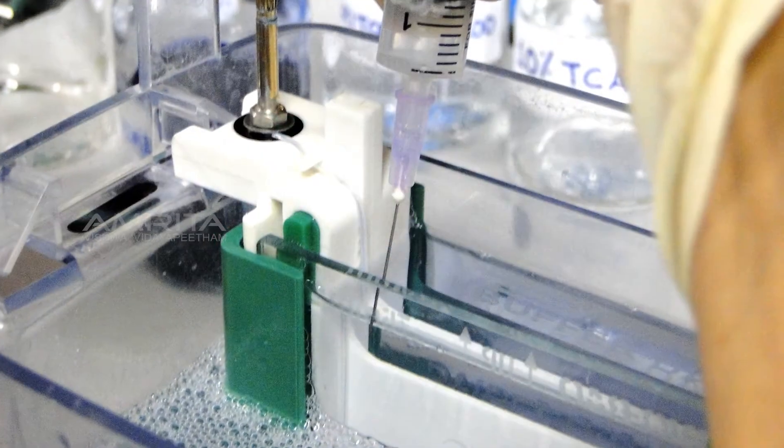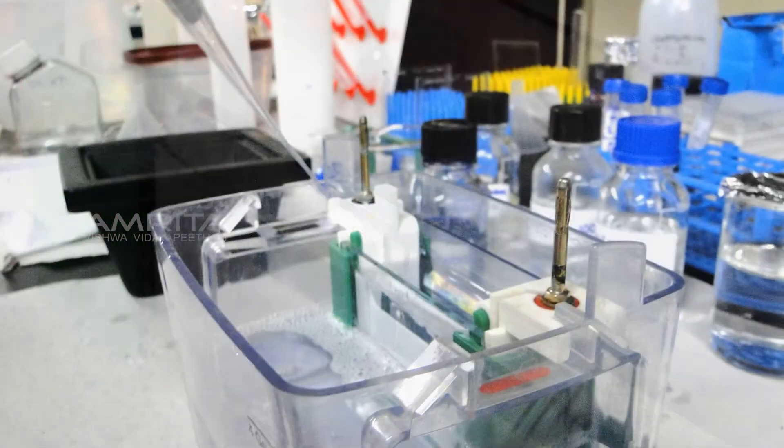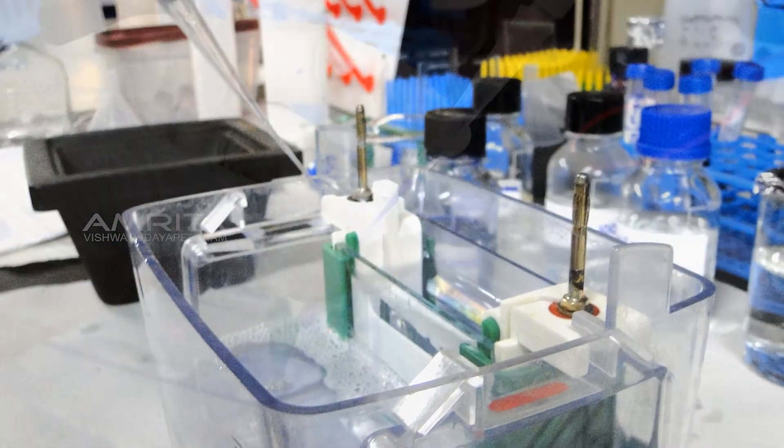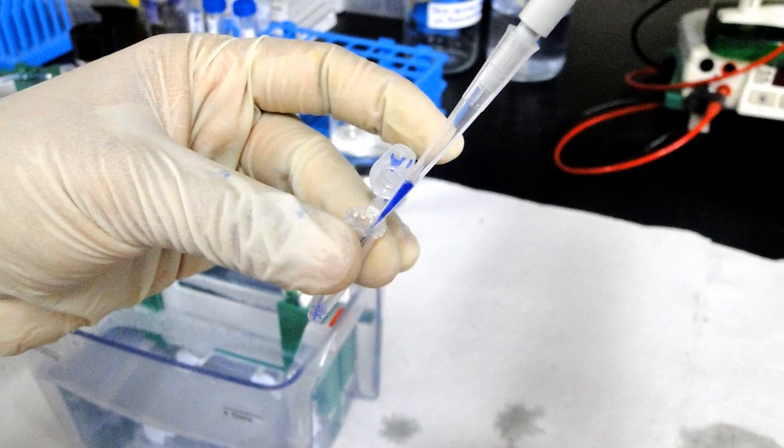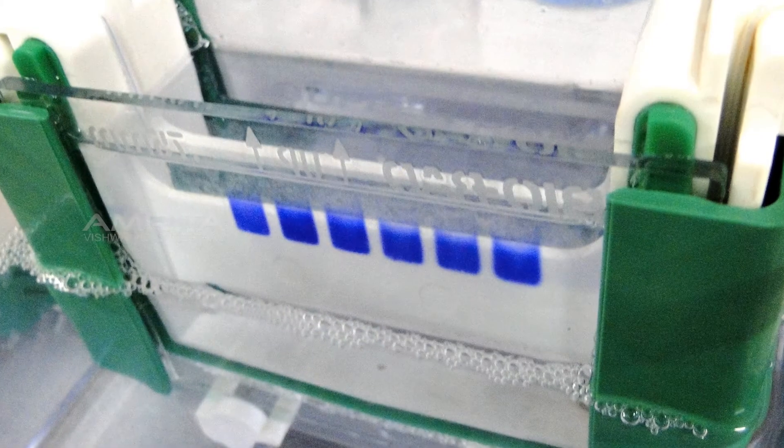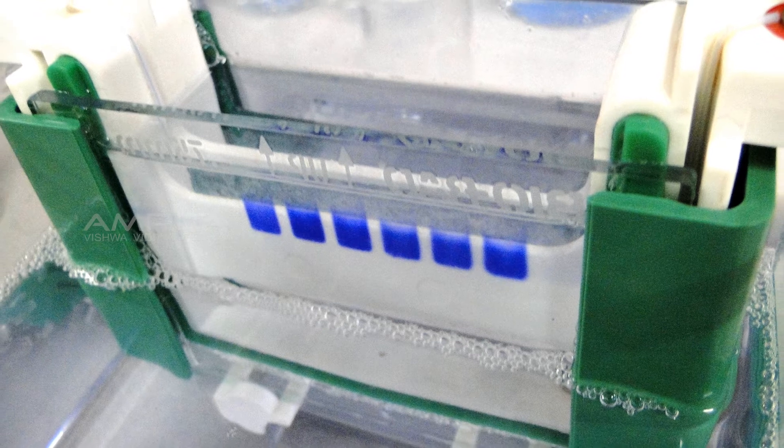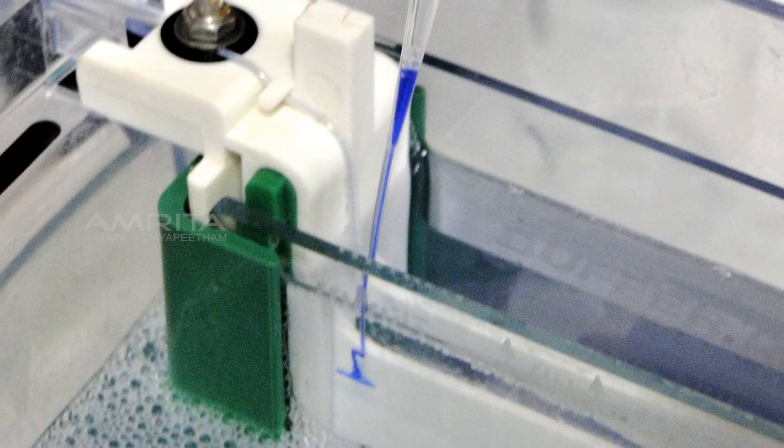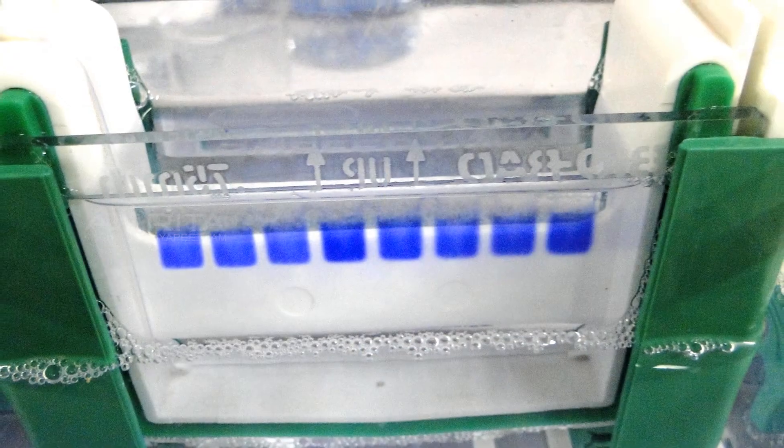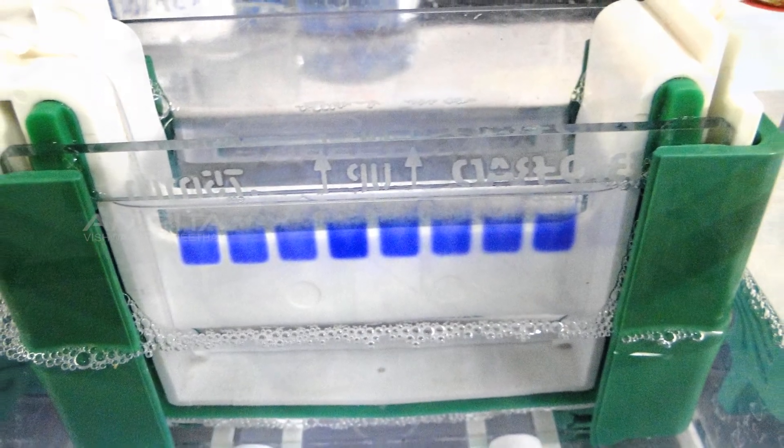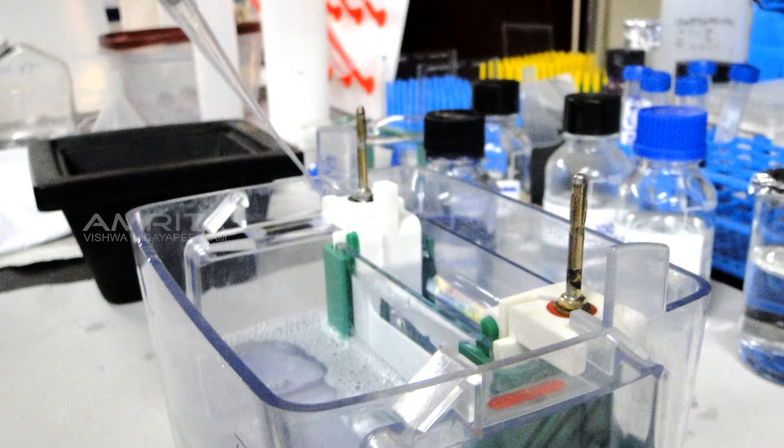Rinse the wells with 1x running buffer using a syringe. Rinse the loading tip with buffer. Samples can now be loaded onto the gel. Deliver 20 microliters of the protein sample into the well carefully by inserting the tip a few millimeters from the well bottom without breaking the wells. Rinse the loading tip with the buffer after each loading.